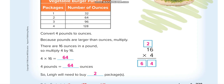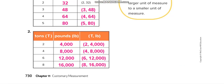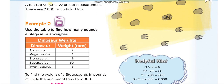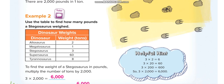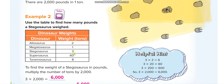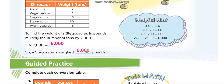Now, the ton is a very heavy unit of measurement. There are two thousand pounds in one ton, so one ton is equal to two thousand pounds. They want us to use the table to find how many pounds a stegosaurus weighed. It was 3 tons, and since one ton is two thousand pounds, 3 times two thousand equals six thousand pounds.